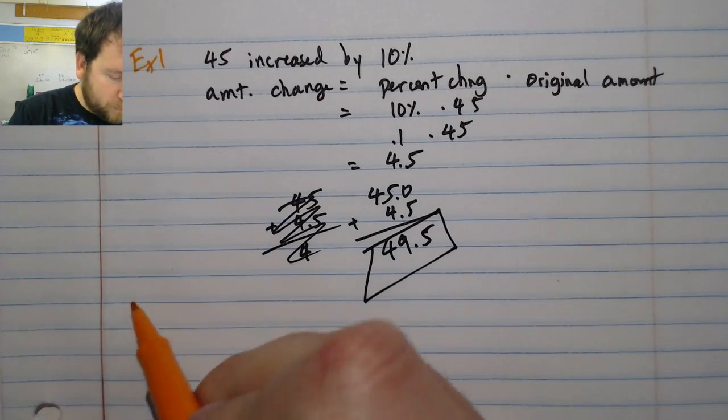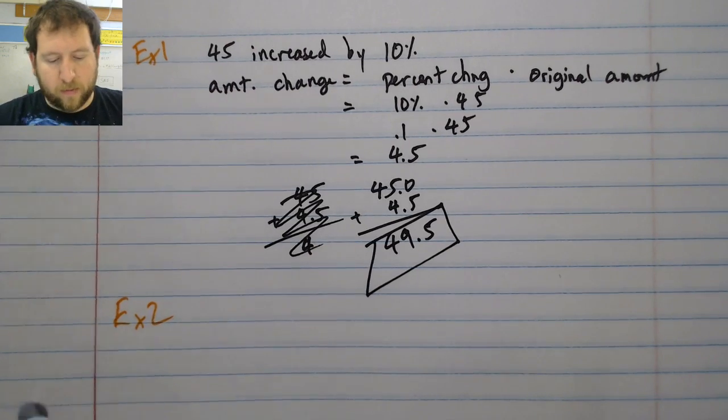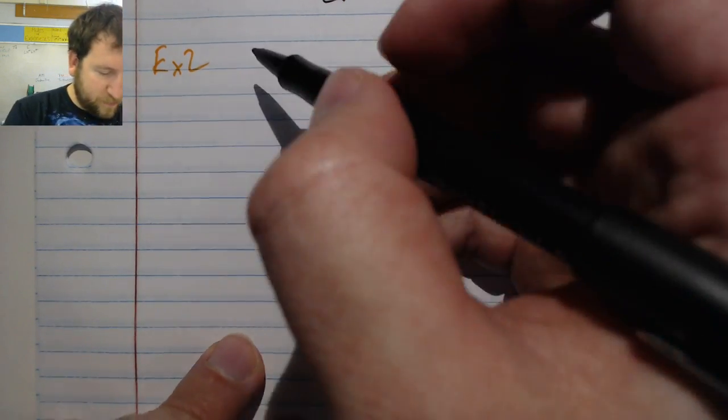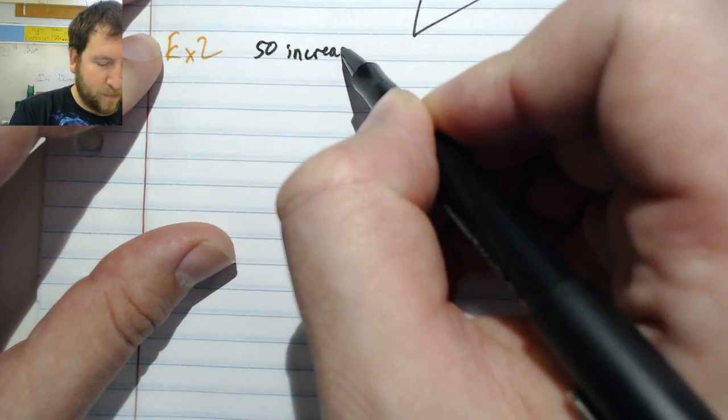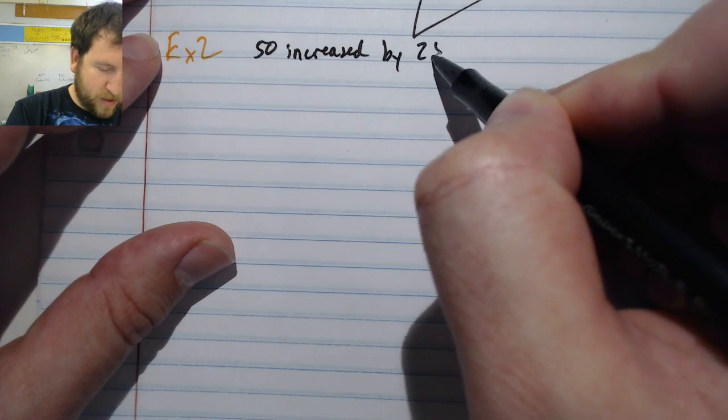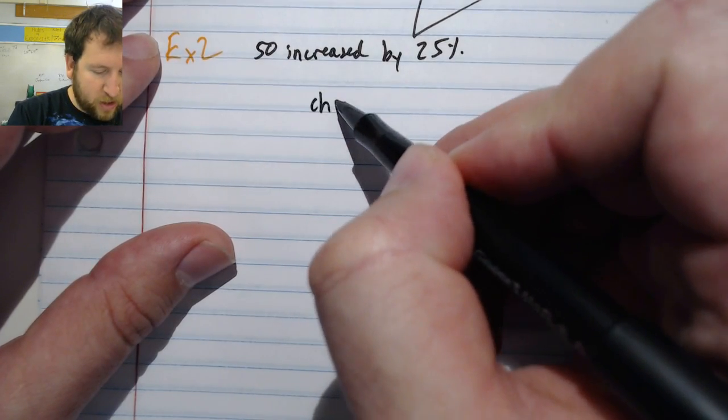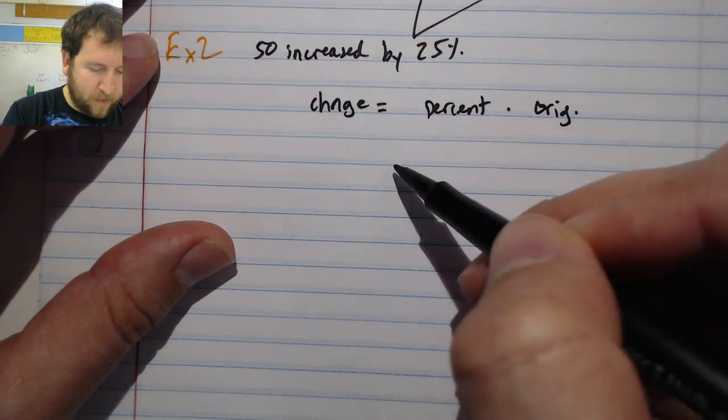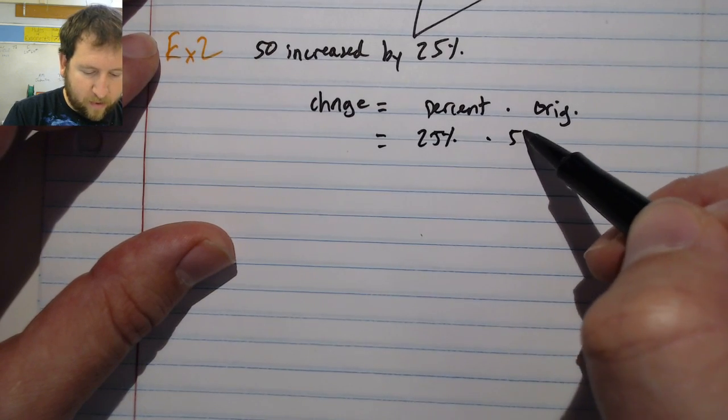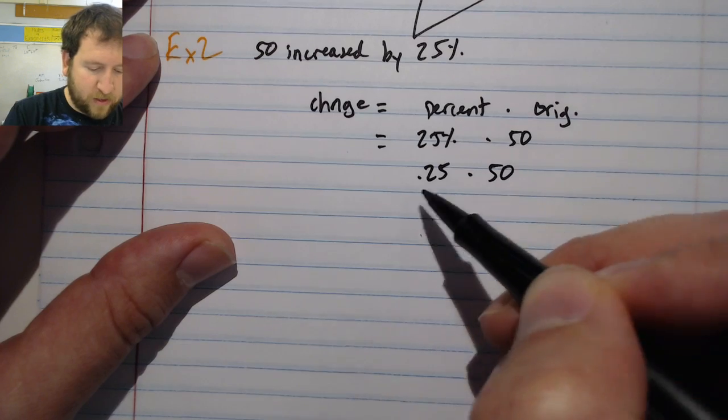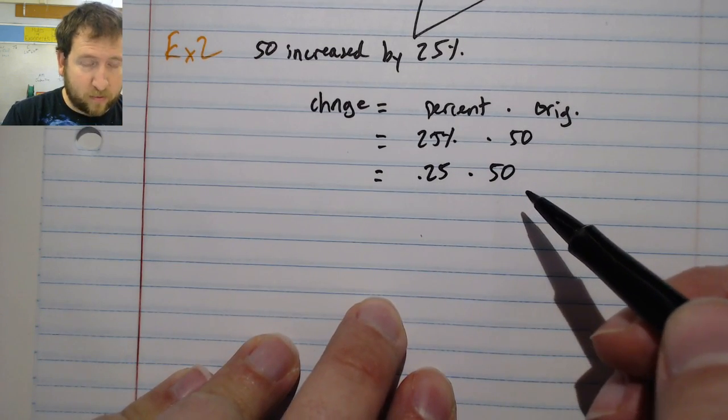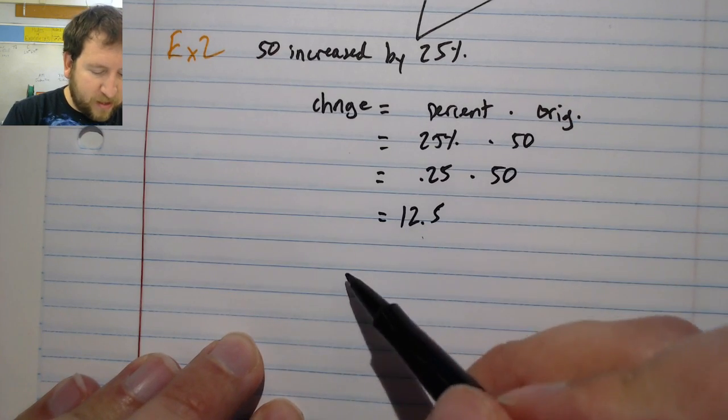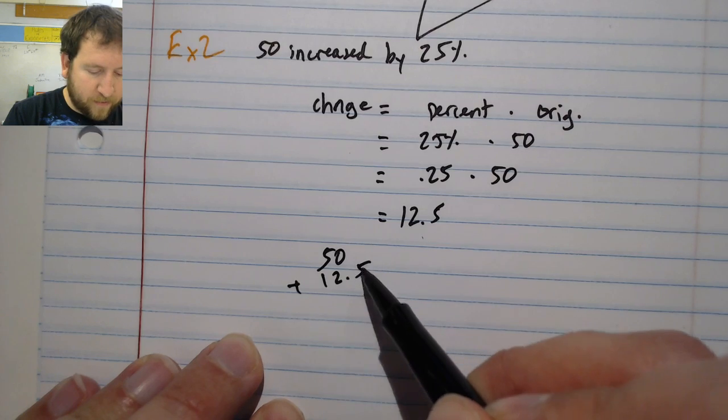Let's look at another example. In this one, let's see what happens when 50 is increased by 25 percent. I'm going to write my change equals my percent times my original. I've got 25 percent times 50. I'm going to rewrite this as 0.25 times 50. Now I have a quarter of 50, which should be 12.5. It increased, so 50, my original, plus 12.5 is going to be 62.5.